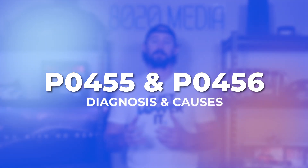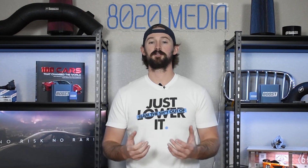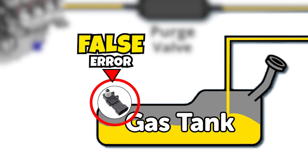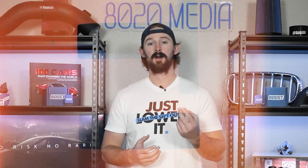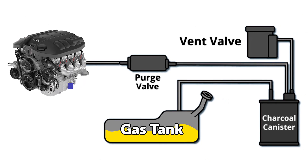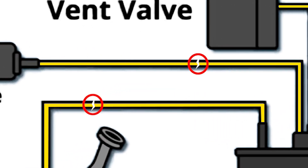When diagnosing the actual cause of these error codes, there are ultimately two possibilities: either you have an issue with your sensor giving you a false code, or you have an issue with some other component of your EVAP system that is causing a leak and causing the fuel vapor pressure inside the gas tank to drop.